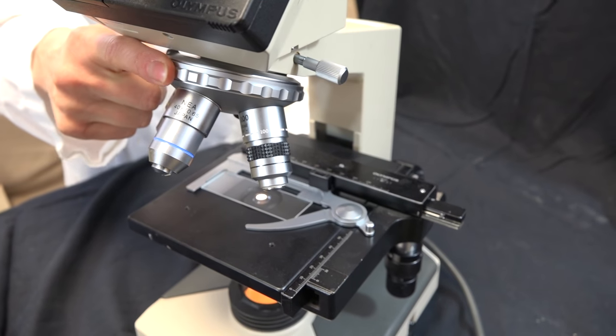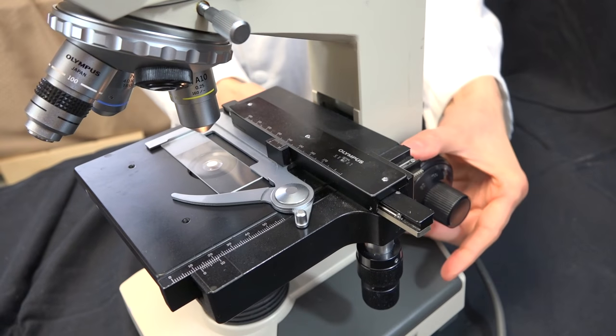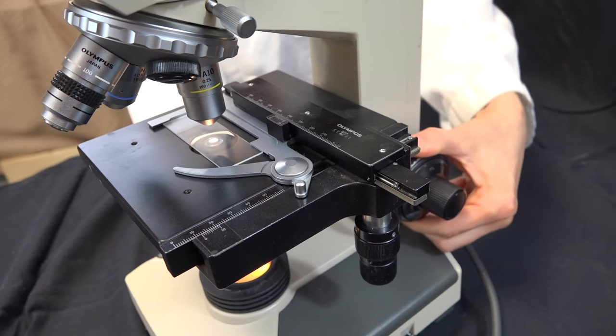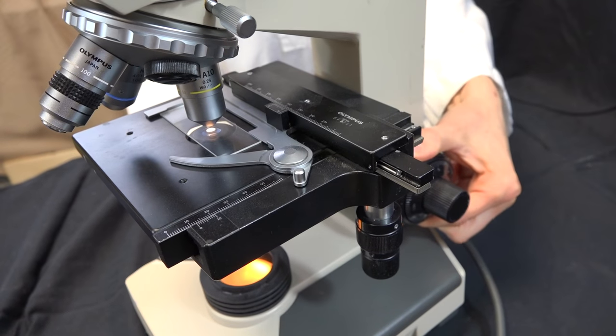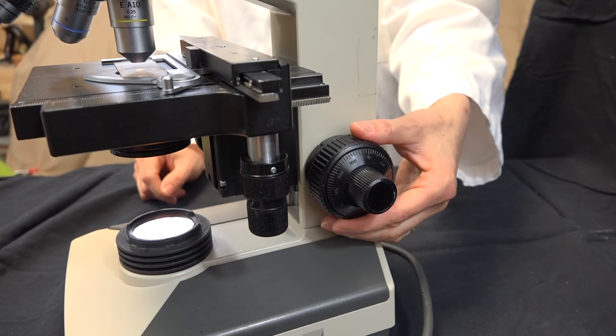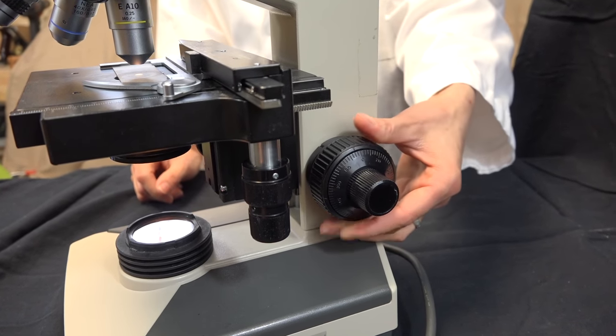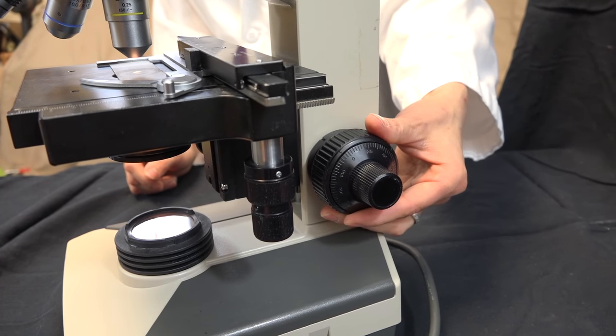Then turn the low power objective into place and use the coarse focus to move the stage all the way to the top. While looking through the objectives, slowly turn the coarse focus down until you can find your specimen.